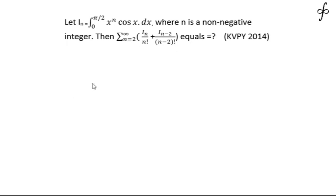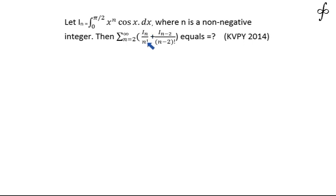Let us discuss a problem that appeared in KBPY 2014 under stream SB or SX. The question says: let I_n equal to the integral from 0 to π/2 of x to the power n times cos x dx, where n is a non-negative integer. Then find the summation from n equal to 2 to infinity of I_n divided by n! plus I_{n-2} divided by (n-2)!.